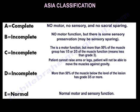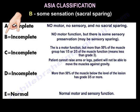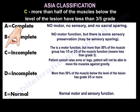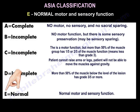To summarize: A is bad — it's not like a college grade. B means you have some sensation, specifically sacral sparing. C means more than half the muscles below the level of the lesion have less than grade 3 out of 5. D means more than half the muscles below the lesion have grade 3 out of 5 or more. And E is normal motor and sensory function.